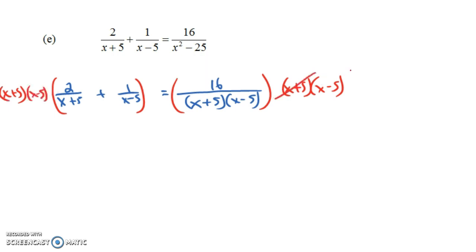Now on the right-hand side, we're going to get some nice things to happen. A lot of things go away, divide out, and we just end up with 16. On the left-hand side, we're also going to get some nice things to happen, but we have to distribute this x plus 5 times x minus 5.